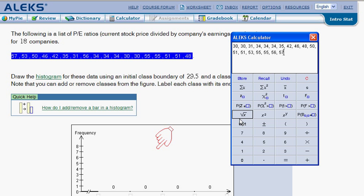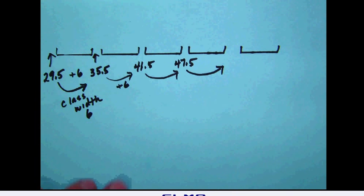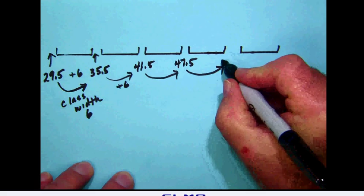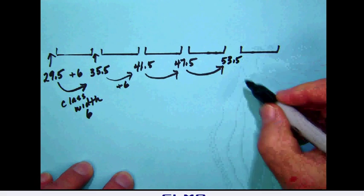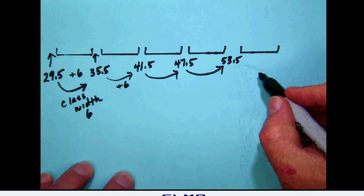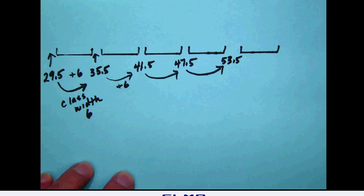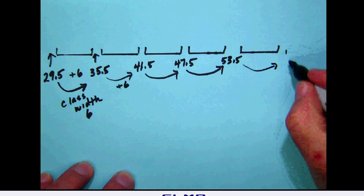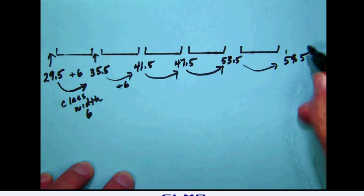Now notice that the biggest number on the list is 57 and so we're going to have to have a box or a basket, a class they call it, for that 57 to fit in. So going back over here and looking at our numbers, our boxes that we had once before, we take our 47.5 and add 6 which is going to be 53.5 and we see that we haven't gone far enough because we have no place for our 57. So we're going to have to add yet another one. So 53.5 plus 6 more is going to be 59.5 and so that will in fact hold our biggest number.